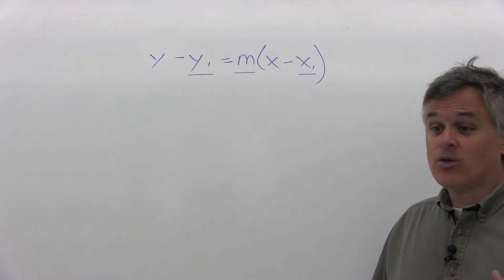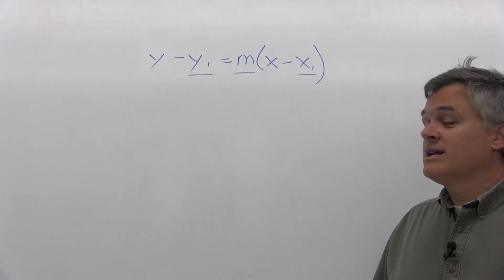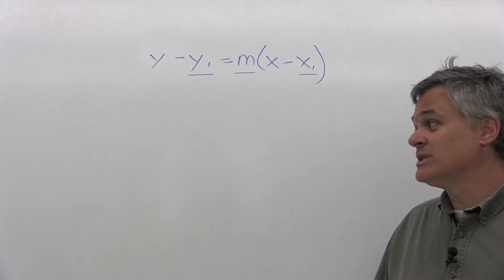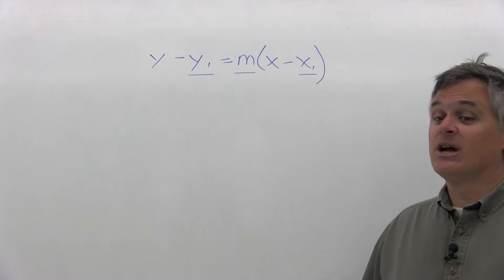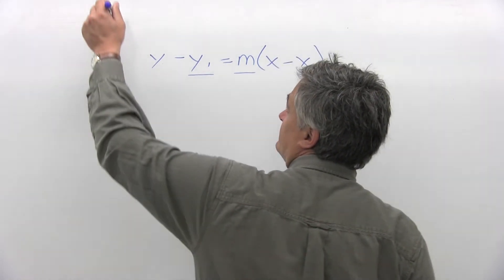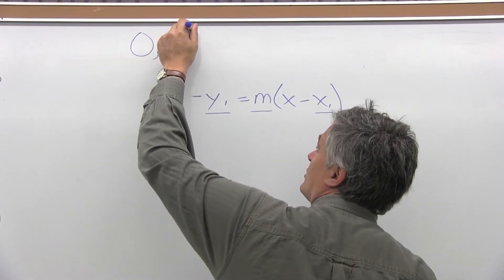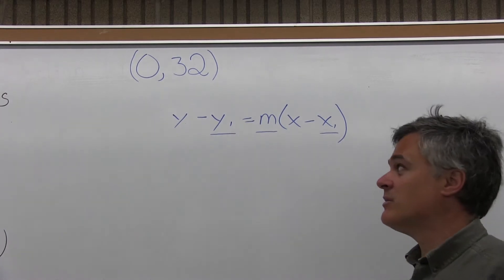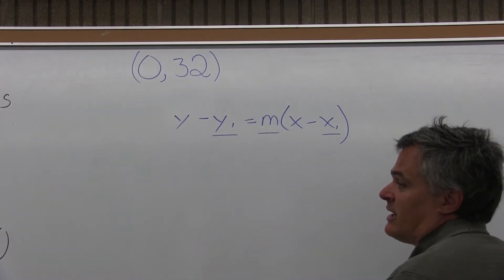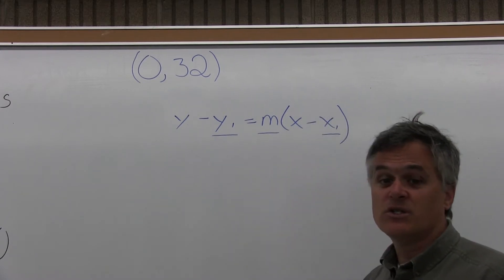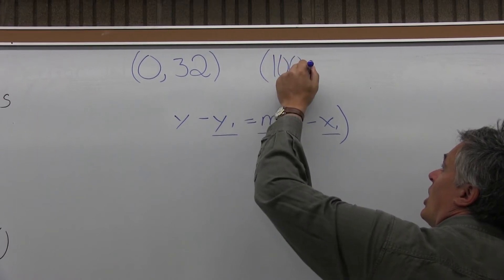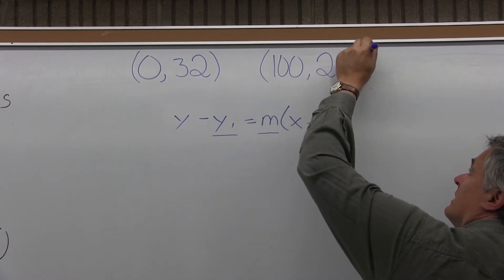When you read this problem, keeping in mind that you're looking for two points or a point and a slope, what you're getting is the coordinates of two points. The first point is zero degrees Celsius corresponds to 32 degrees Fahrenheit — that's the freezing point of water. The second point is 100 degrees Celsius corresponds to 212 degrees Fahrenheit — you might recognize that as the boiling point. So 100 comma 212 gives me the coordinates of a second point.